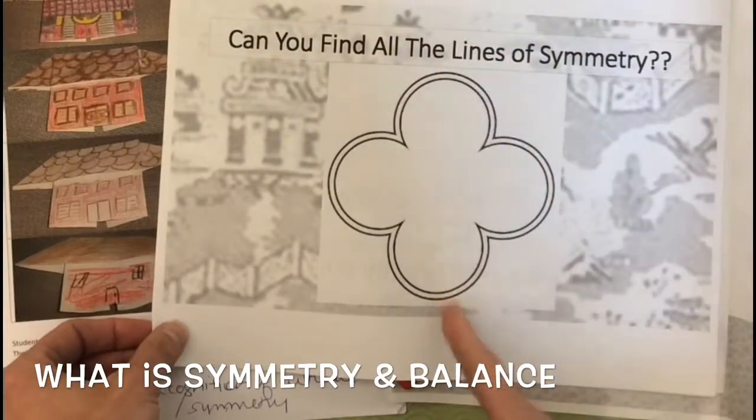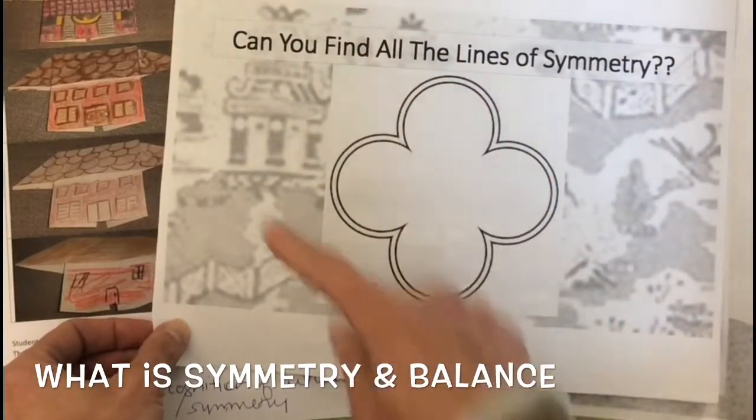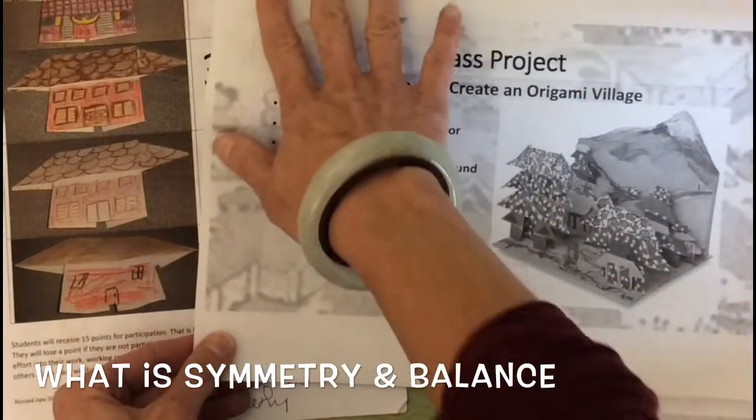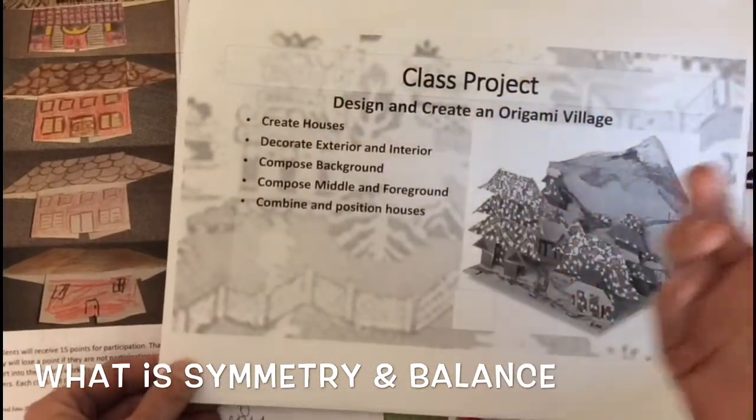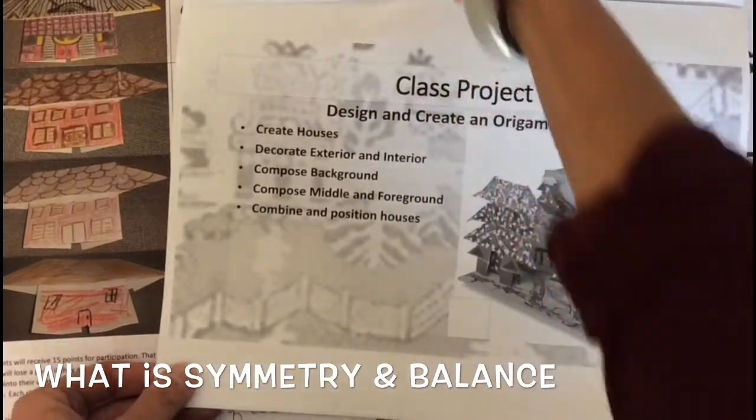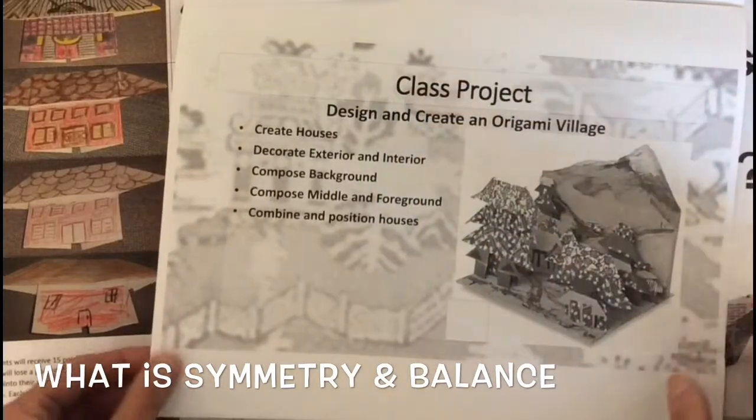With this picture, it has more than one line of symmetry. You can draw a line down and a line across. With our origami houses, they can have one or maybe even more lines of symmetry, but they need at least one line of symmetry going down the middle.